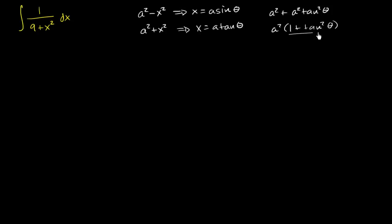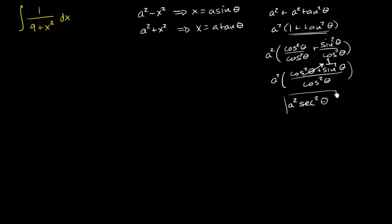Let me reprove this for you. This is going to become a squared times 1, which could be written as cosine squared theta over cosine squared theta. Tangent squared is sine squared theta over cosine squared theta. This becomes a squared times cosine squared theta plus sine squared theta, all over cosine squared theta. This numerator becomes 1, so this is 1 over cosine squared theta. Everything simplifies to a squared secant squared theta.